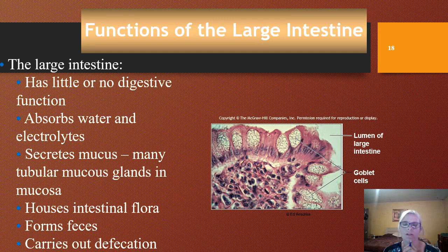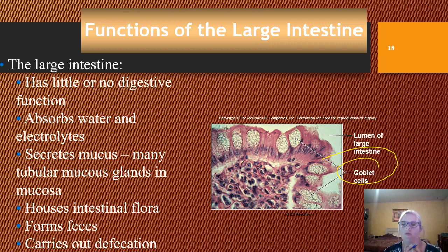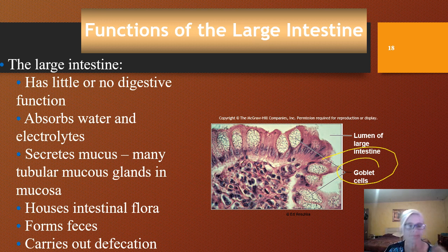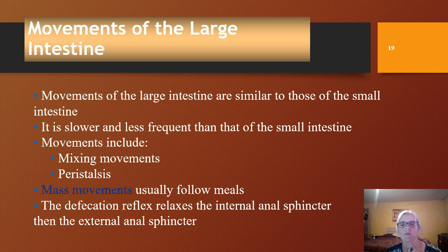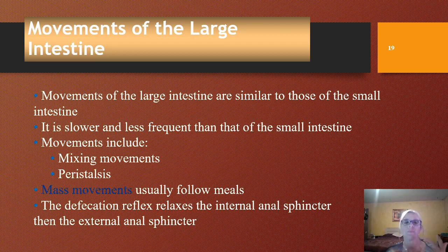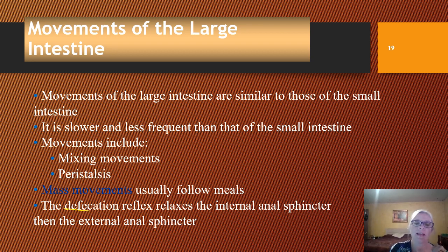The large intestine does not really have any digestive function. It does absorb some water and electrolytes. We have goblet cells for mucus secretion, which is protective. This is where we have our intestinal flora — our good bacteria — which helps maintain balance in our system. It also forms feces, our waste products, and carries out defecation. We have what we call the defecation reflex, which relaxes the internal sphincter first and then the external sphincter.